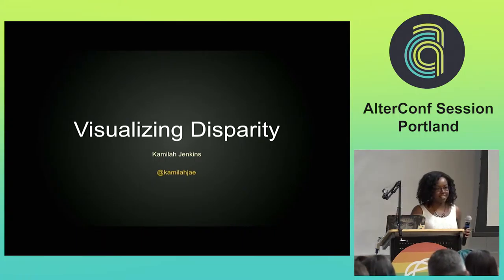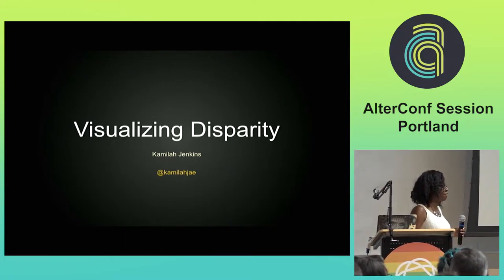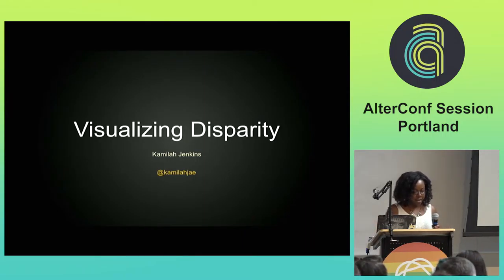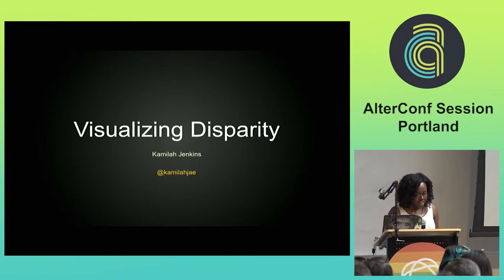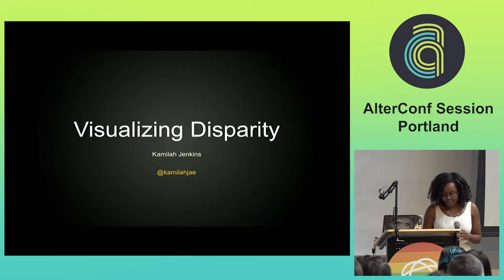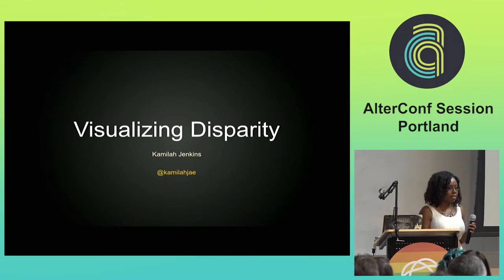My name is Camila Jenkins — at Camila J. on Twitter if you want to follow me. I'm originally from Cleveland, Ohio. I graduated with a BA in psychology and found my home in Seattle, where I became engrossed in my passion for coding. I attended multiple meetups there and found a way to use code to automate tasks as a researcher.